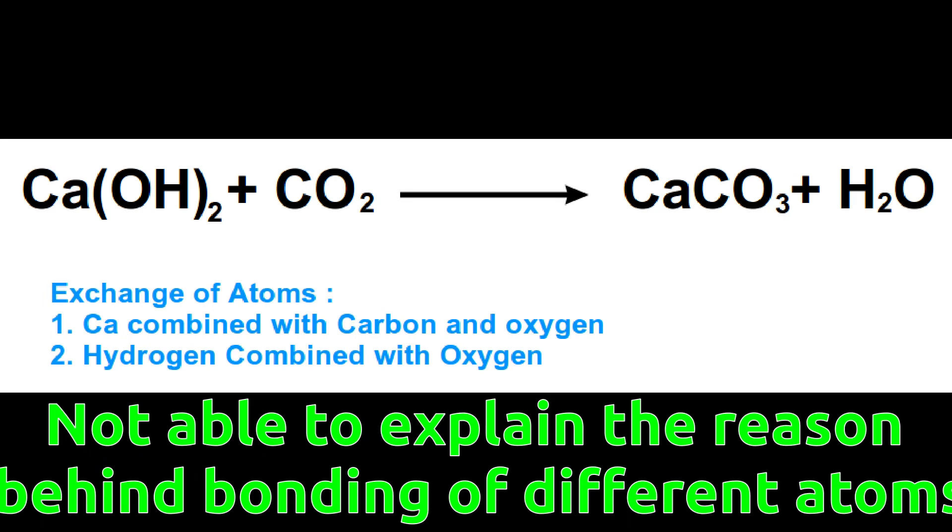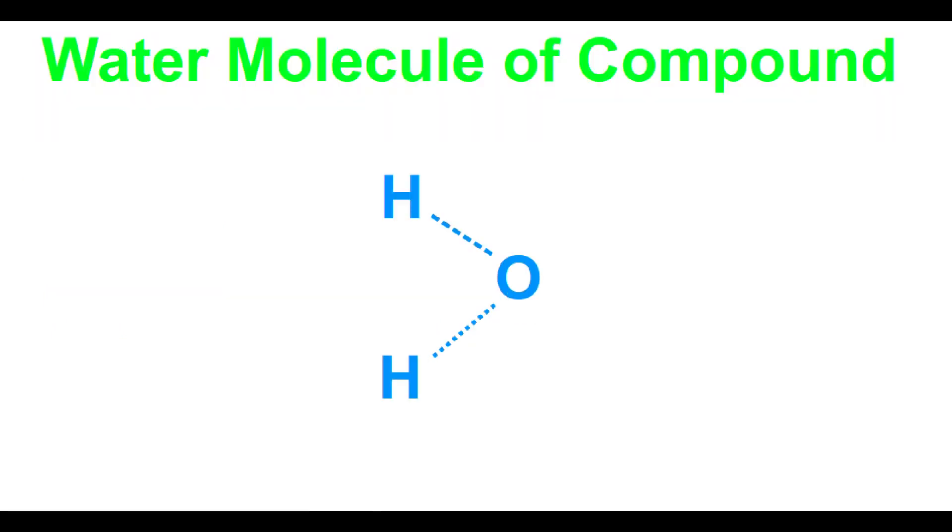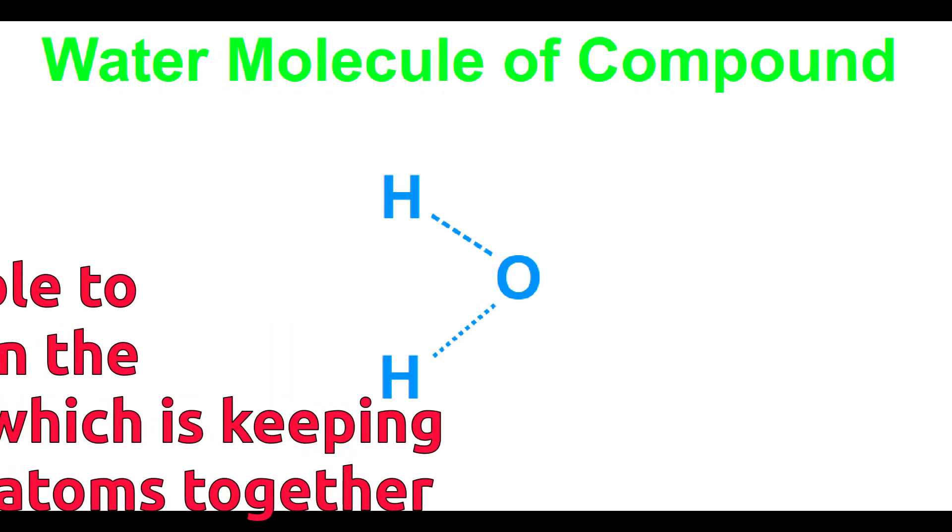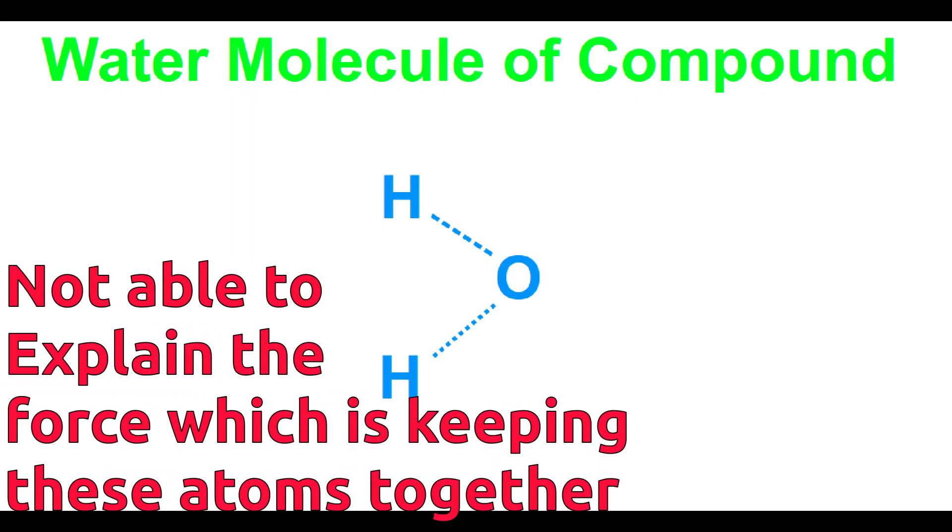He failed to answer why atoms of two different elements combine to form compounds. When a compound is formed, two different type of atoms or elements get attached to each other. Dalton's model was not able to explain the force between two different atoms inside the compound.